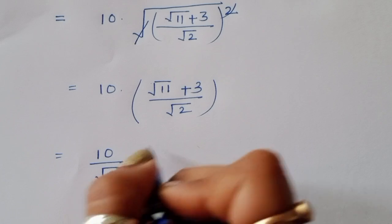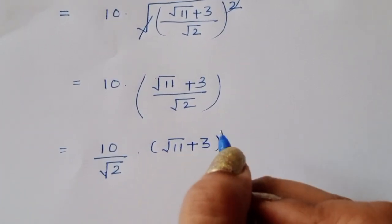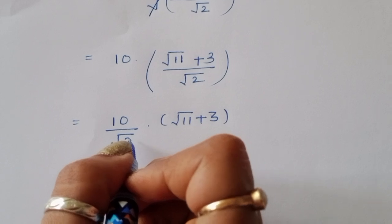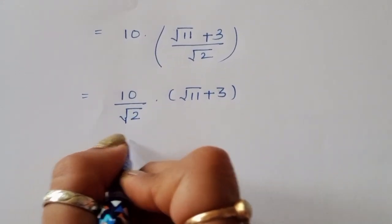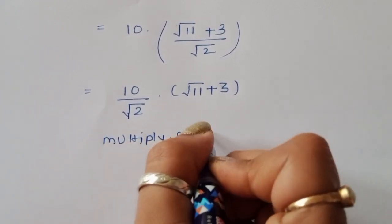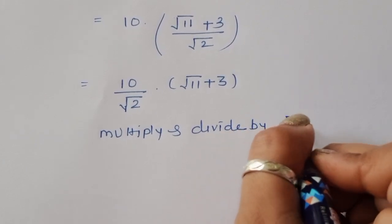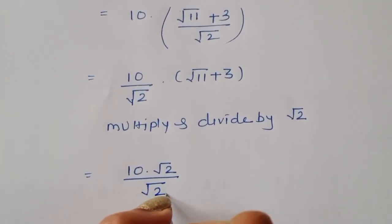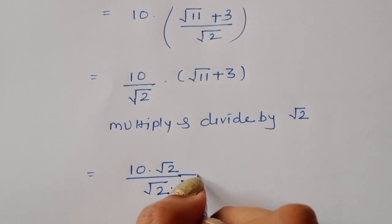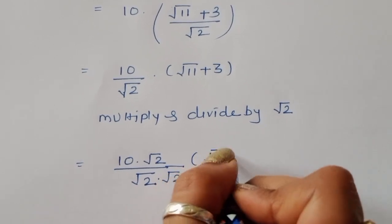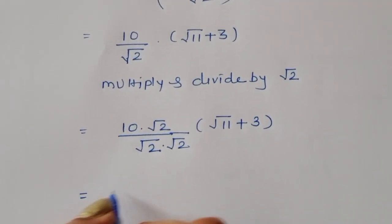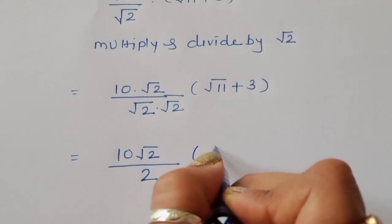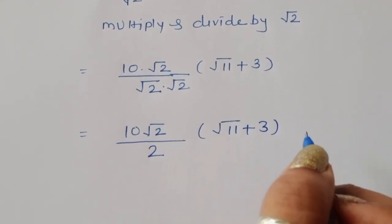Now we separate the term: 10 divided by √2 times (√11 plus 3). To rationalize this denominator, we multiply and divide by √2, giving us 10√2 divided by (√2 times √2) times (√11 plus 3), which is 10√2 divided by 2 times (√11 plus 3).